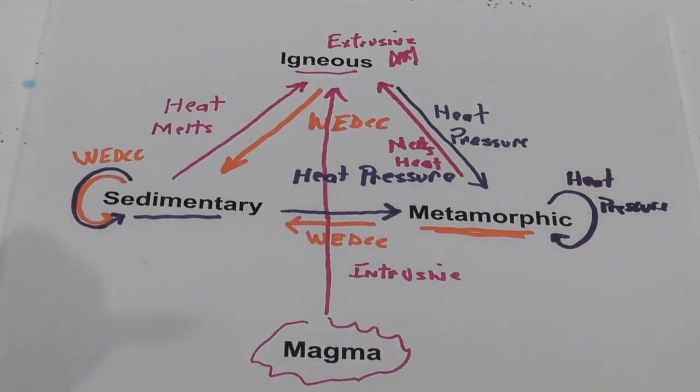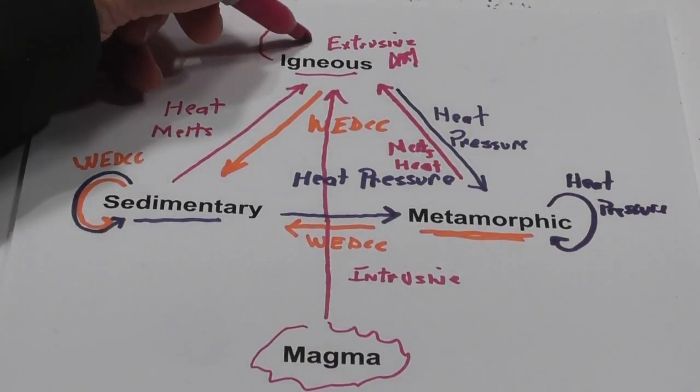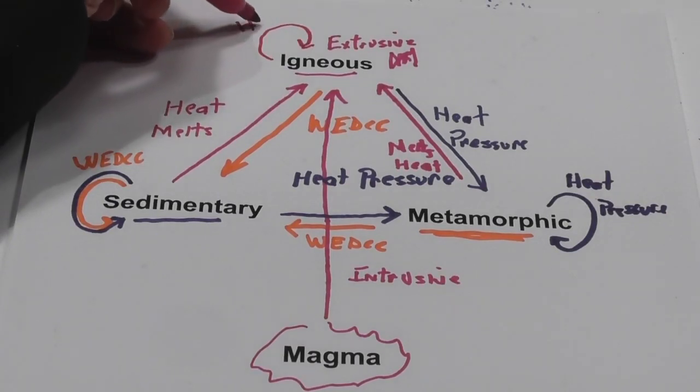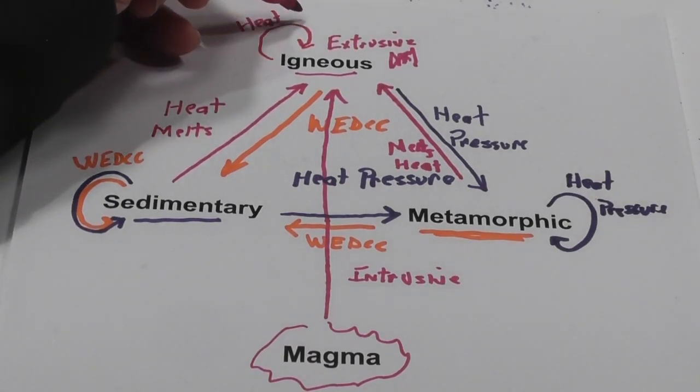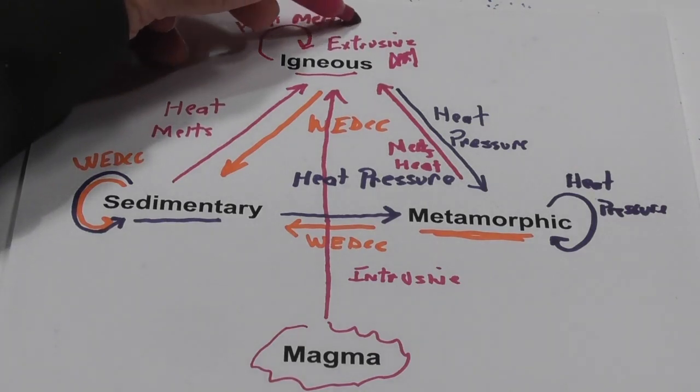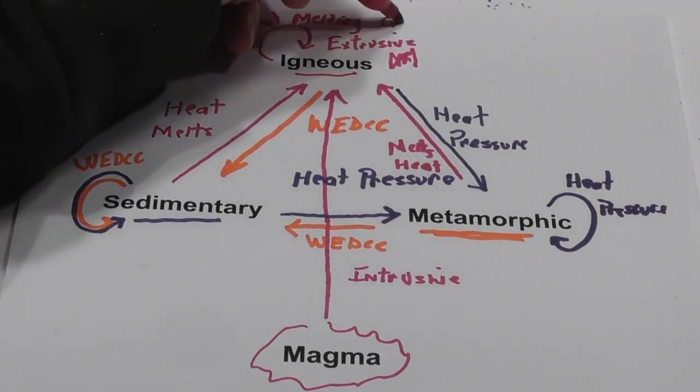And then the igneous rock, yes, can become an igneous rock with heat and melting. And many times, depending on the rate of cooling, you get crystals.